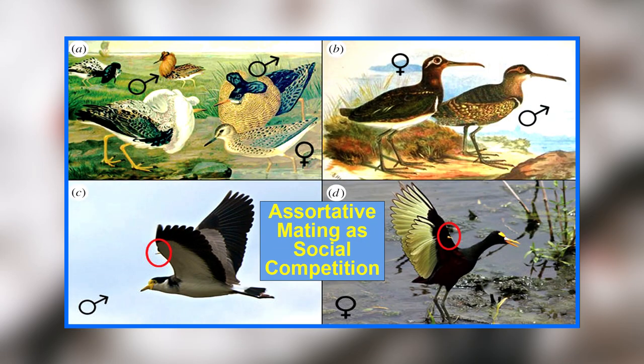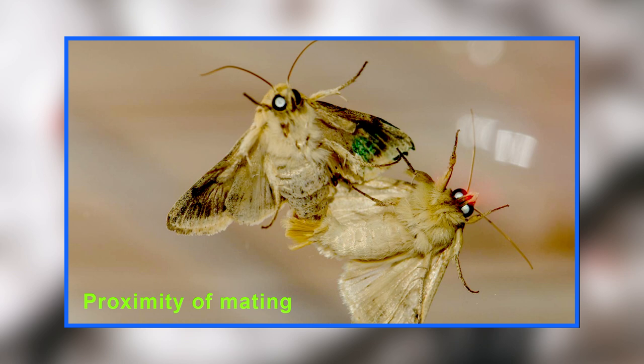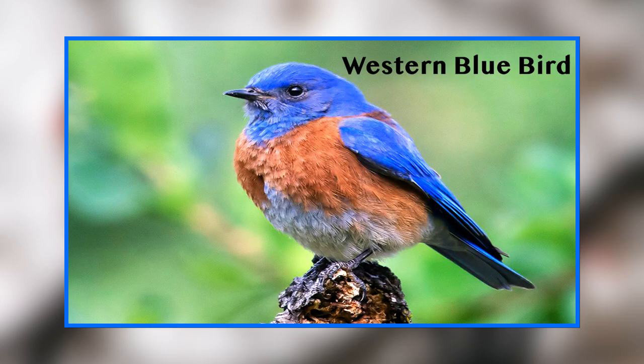Assortative mating can at times arise as a consequence of social competition. Traits in certain individuals may indicate competitive ability, allowing them to occupy the best territories. Individuals with similar traits that occupy similar territories are more likely to mate with one another; in this scenario, assortative mating does not necessarily arise from choice but rather by proximity. This was noted in western bluebirds, although there is no definite evidence that this is the major factor resulting in color-dependent assortative mating in this species. Different factors may apply simultaneously to result in assortative mating in any given species.